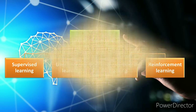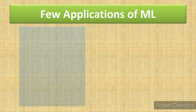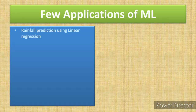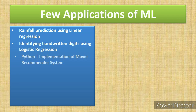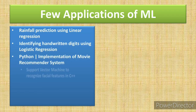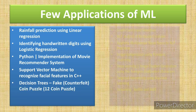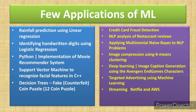Now let's look at the applications of machine learning. These include rainfall predictions, handwriting recognition, face recognition. There are also support vector machines, decision trees, credit card fraud detection, NLP analysis, image compression, deep learning, and targeted advertising using machine learning.